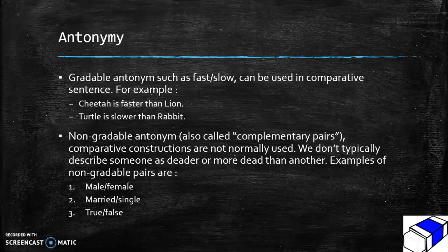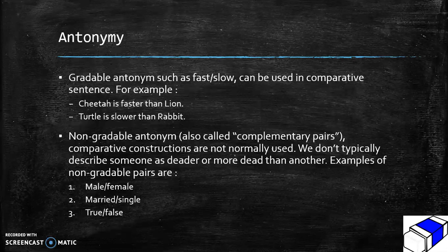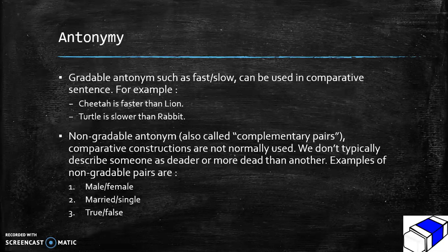Non-gradable antonyms are also called complementary pairs. Comparative constructions are not normally used — we don't typically describe someone as 'more dead' than another. Examples of non-gradable pairs are: male and female, married and single, and true and false.